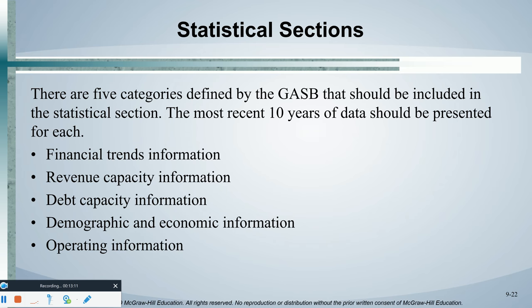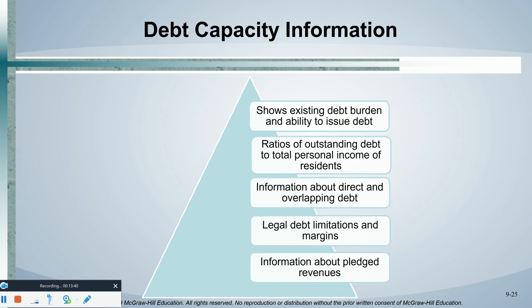And then we have our statistical section. I'm not going to spend a lot of time on this, but it is quite interesting. We look at demographic information, economic information, debt information, revenue information — where we get our revenues — who are the largest employers in the city, what is the per capita income, what is the average age of a citizen, et cetera. That's the statistical section.